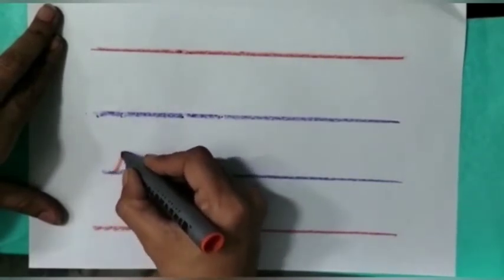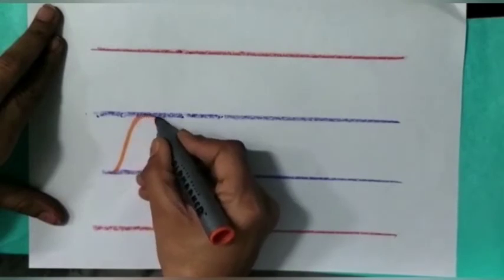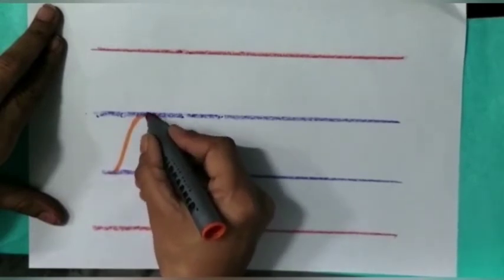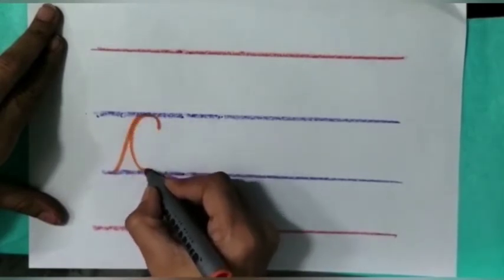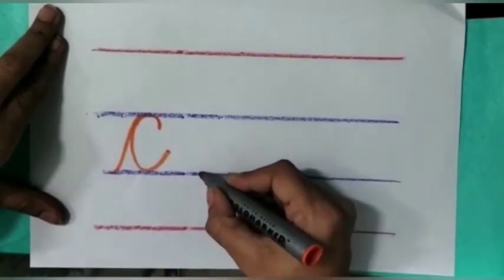Make a curve line. Go up and down and go to center line. This is the letter C.